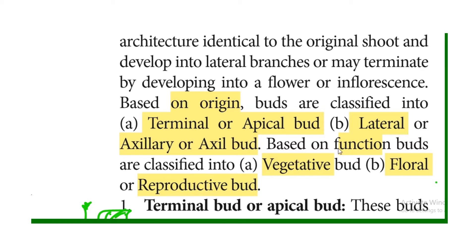Based on function, buds are classified into two types: vegetative buds and floral or reproductive buds. Vegetative buds produce leaves. Floral or reproductive buds produce flowers. Flowers are the reproductive part of the plant, so those are called reproductive buds.